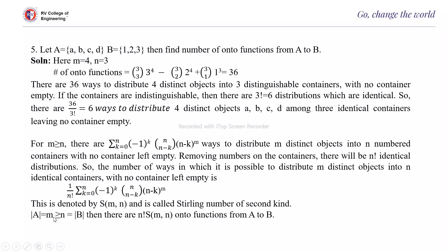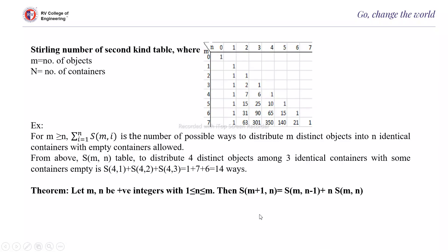If |A| = m ≥ n = |B|, then there are n! × S(m, n) onto functions from A to B. This is a formula you should remember. If m and n are positive integers with 1 ≤ n ≤ m, then S(m+1, n) = S(m, n−1) + n · S(m, n). This is the recursive formula for finding the Stirling number of the second kind.